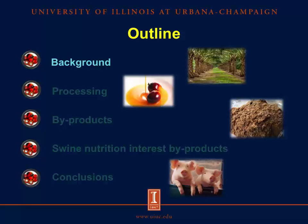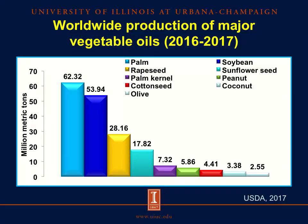Let's start with a little bit of background. This graph shows the production of different vegetable oils in the world. The y-axis shows the oil production in millions of metric tons and the x-axis represents nine different oil seed crops. The vegetable oil produced the most worldwide is crude palm oil, followed by soybean oil and rapeseed oil. In the fifth position, after sunflower seed oil, is located palm kernel oil, which also comes from the oil palm fruit.